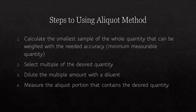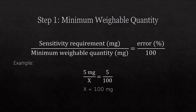Step one: find the minimum weighable quantity. You can do this using this equation — sensitivity requirement in milligrams divided by the minimum weighable quantity in milligrams equals the percent error over 100.